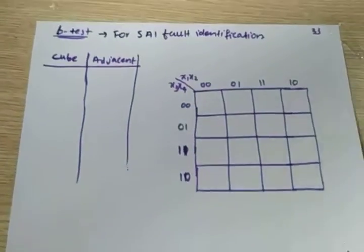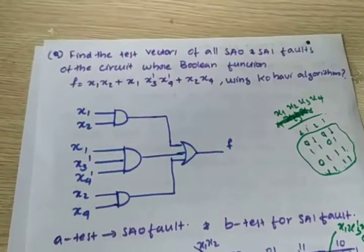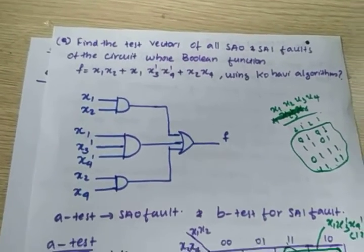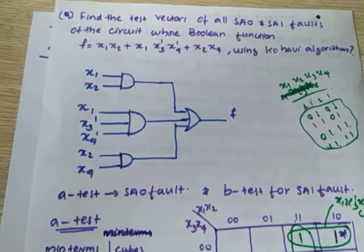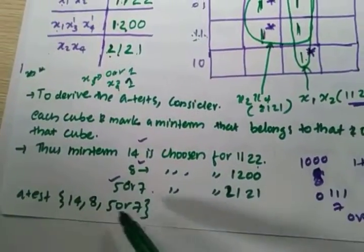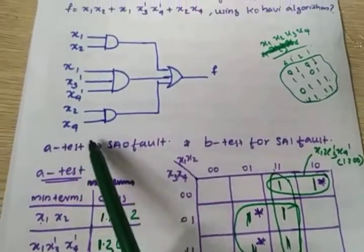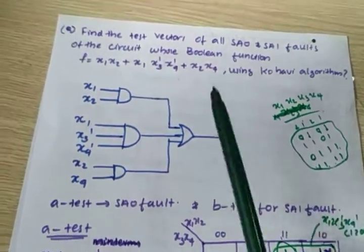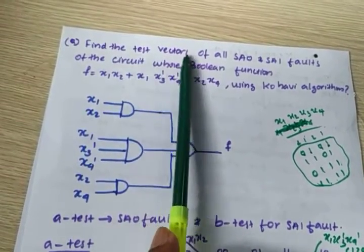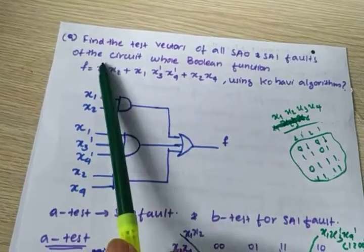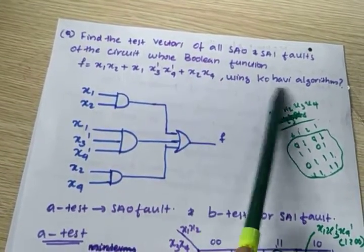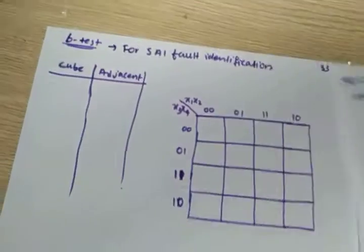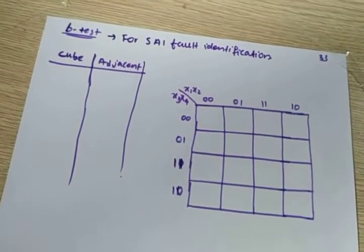Welcome to today's lecture. In the previous lecture I discussed this problem — we are doing the PODEM algorithm. We already did a test and found the test for stuck-at-zero fault. Now we have to do the PODEM algorithm for B-test to find out stuck-at-one fault, because in the question they asked to find out the test for all stuck-at-zero and stuck-at-one faults of a circuit using PODEM algorithm.